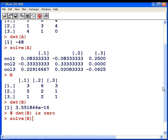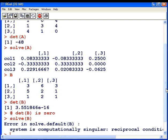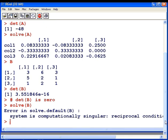Well, we're actually not going to be able to do it. We're going to get an error message here. I'm just going to scroll up. So error in SOLVE default B, its system is computationally singular, which is to say the inverse of B does not exist.